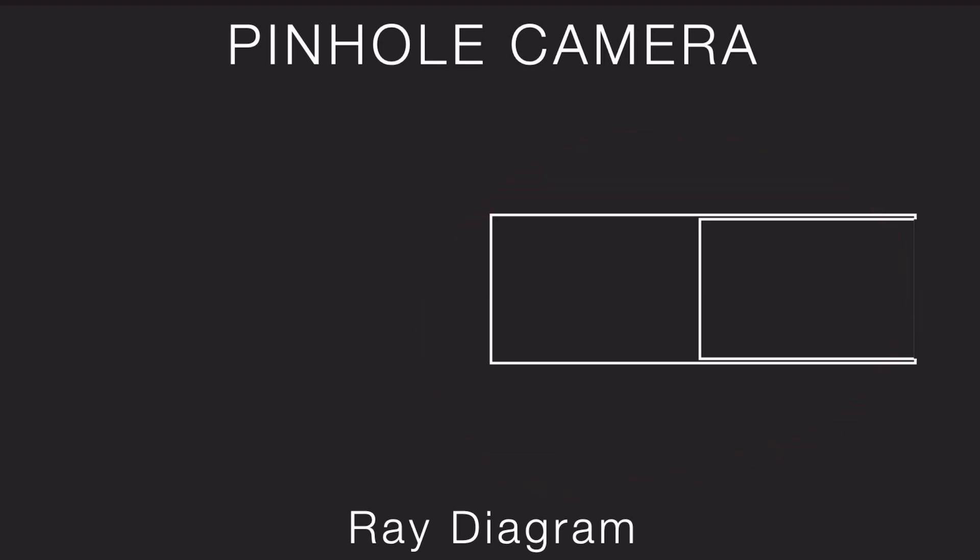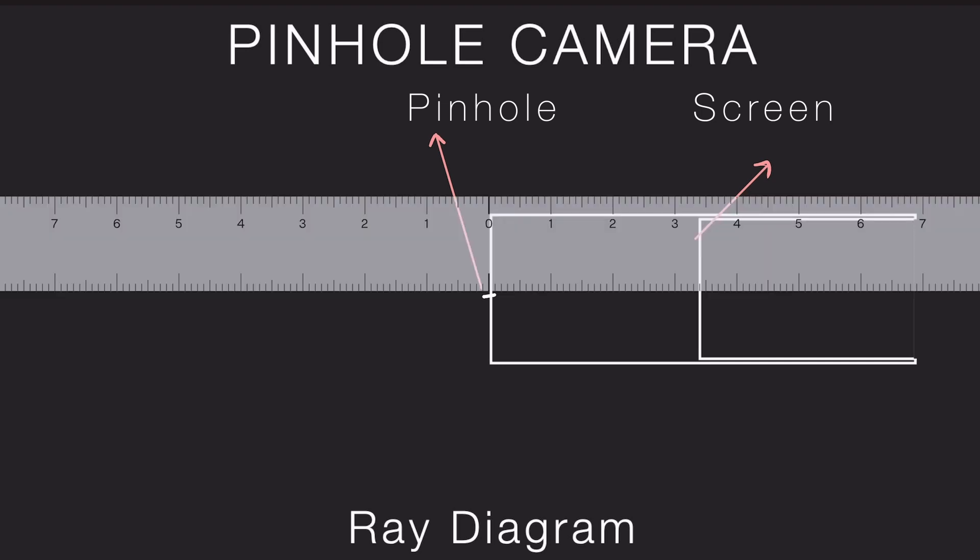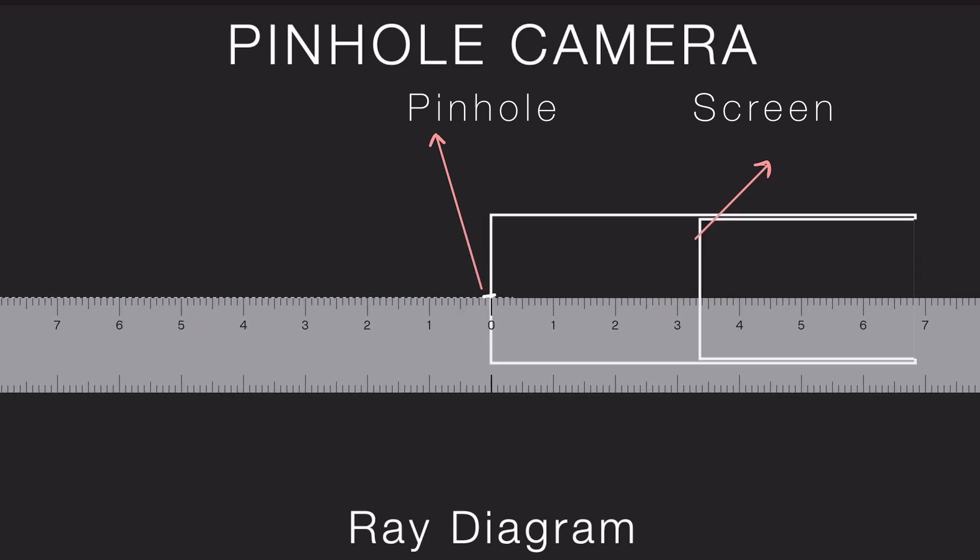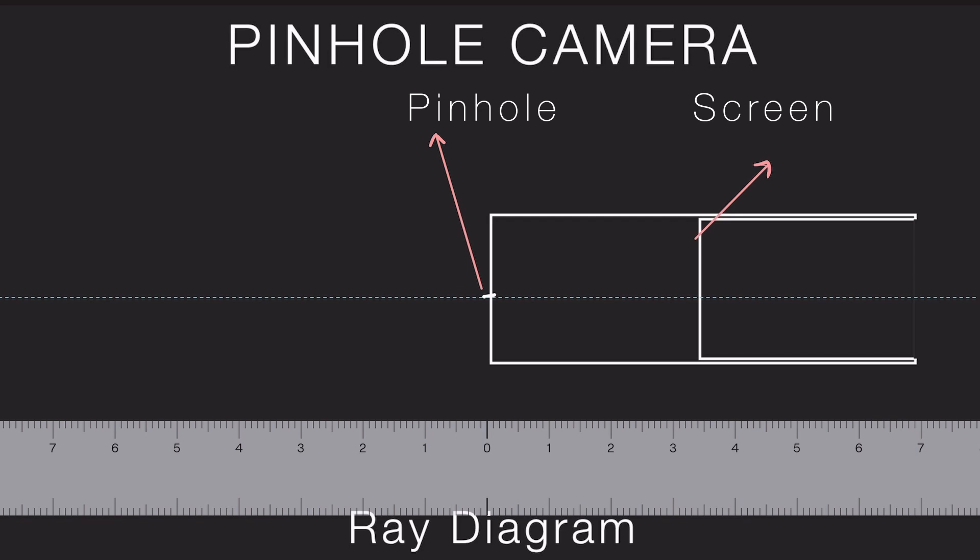Here's our camera setup—a very basic two-dimensional schematic diagram. This is the outer box, this is the inner box, and here is the screen where the image will form. Right here is the pinhole. Let me also draw a reference line passing through the pinhole. We'll use this as a guide to keep the objects, images, and rays aligned.